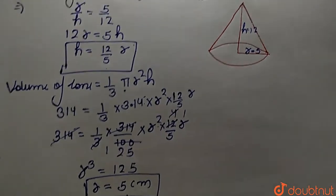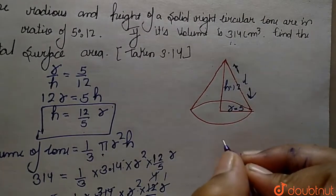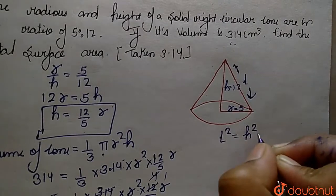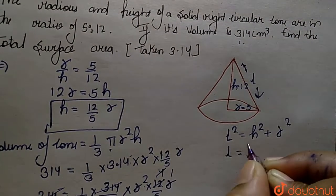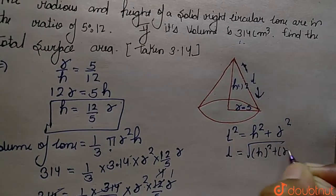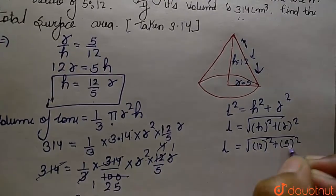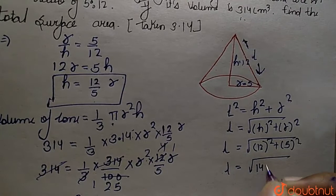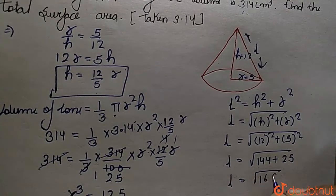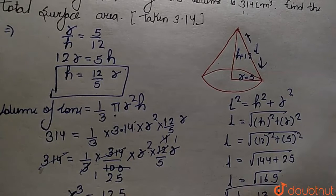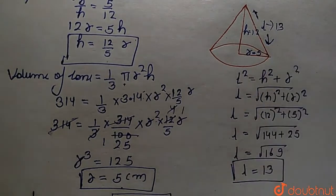Now we have to find the slant height l. Using the formula: l squared equals h squared plus r squared, so l equals the square root of h squared plus r squared. That gives the square root of 12 squared plus 5 squared, which is the square root of 144 plus 25, equals the square root of 169, so l equals 13 centimeters.